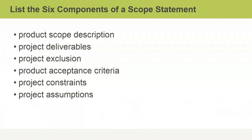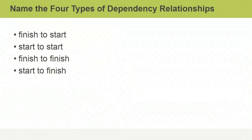The six components of a scope statement include: the product scope description, project deliverables, project exclusions, product acceptance criteria, project constraints, and project assumptions.